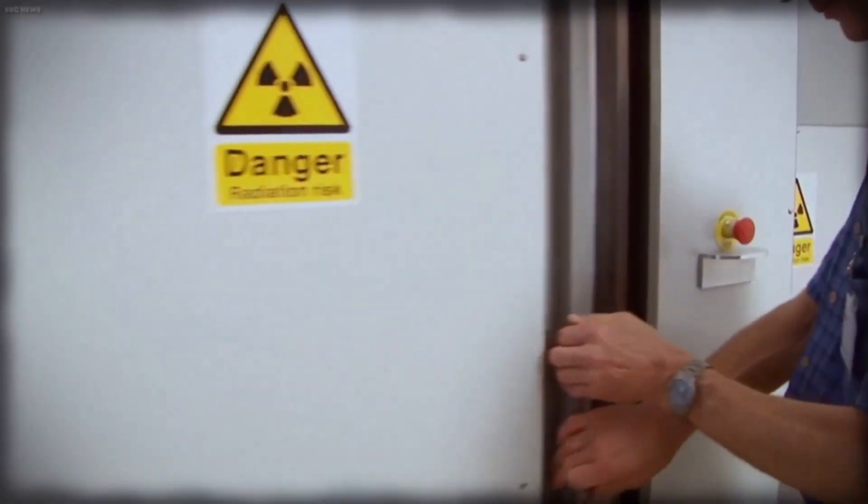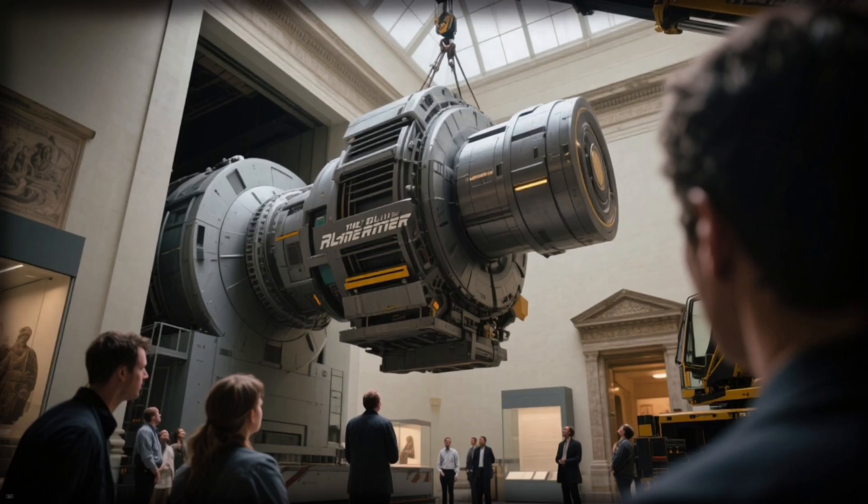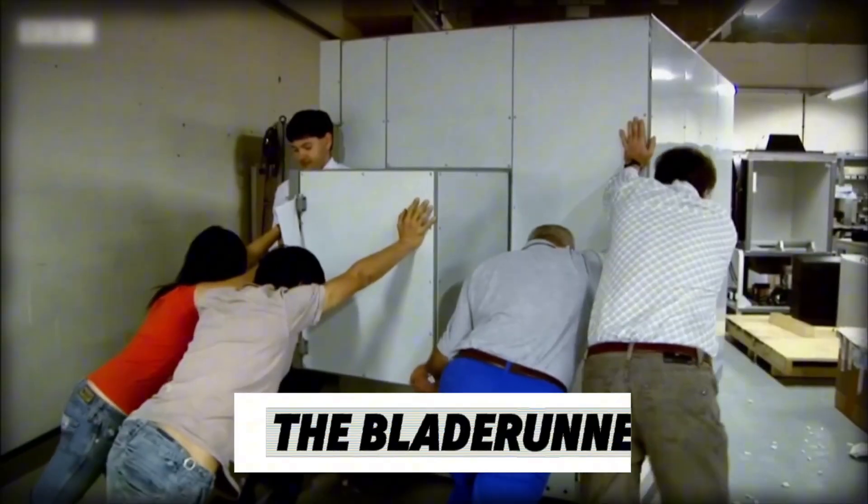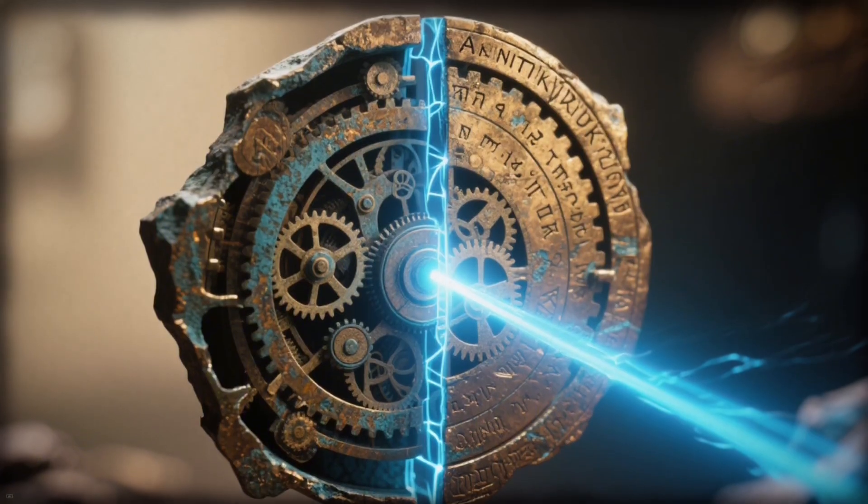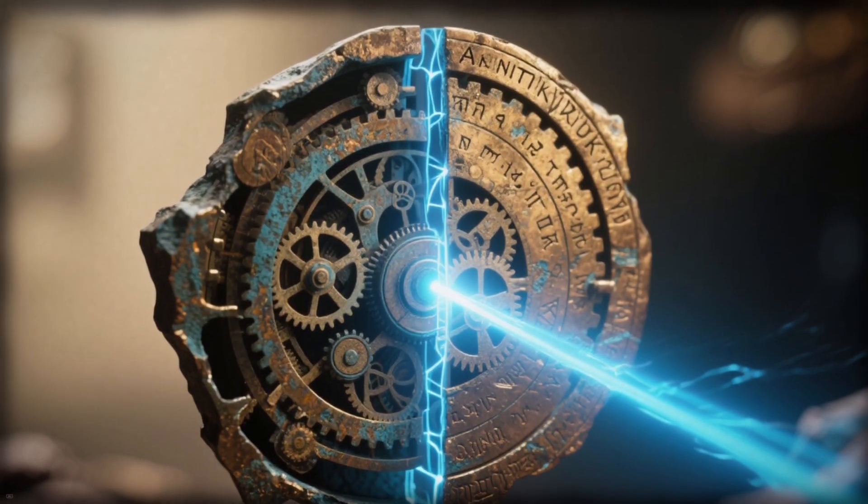The first, a 12-ton X-ray tomography scanner, so massive it had to be craned into the museum, was affectionately called the Blade Runner. It was designed to fire beams of high-energy X-rays through each fragment, one layer at a time.